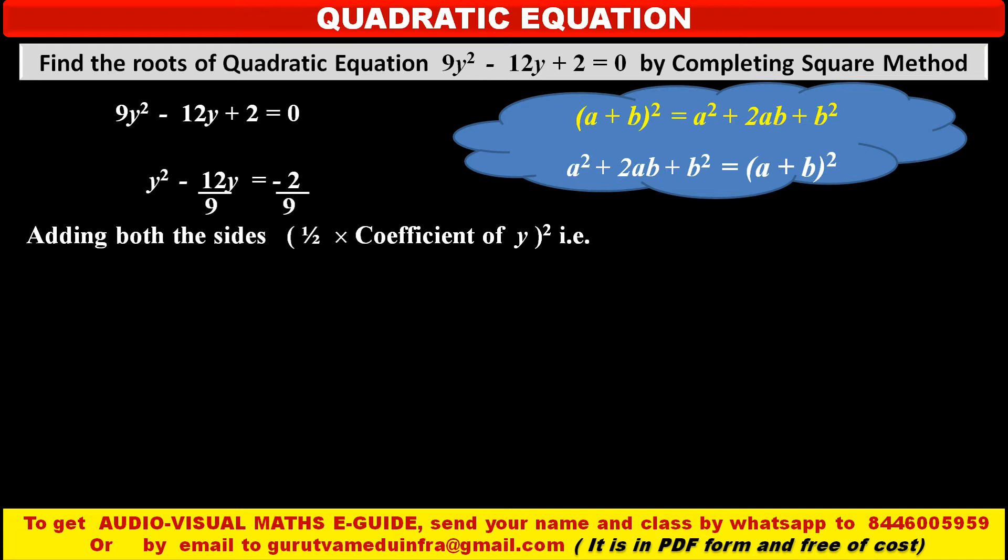So first we have to find this value to add on both sides of this equation. So the value is, in bracket, half of coefficient of y that is -12/9 whole square. If we solve this we will get 4/9.